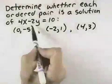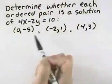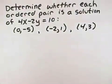So here we've got the equation 4x minus 2y equals 10. We've got three ordered pairs that we want to test in that equation to see if they're solutions.